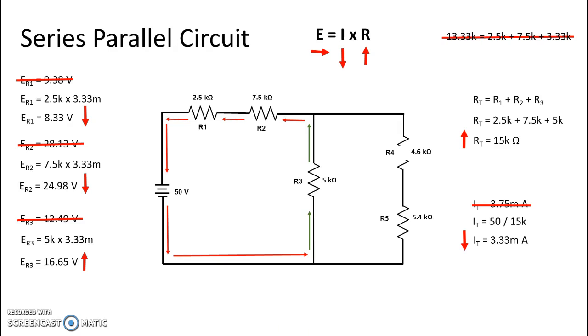However, if I were to read only across R4, in other words I put my black lead on the bottom of R4 and my red lead on the top of R4, I would read my applied voltage because that is where my open is at, so I would see 16.65 volts.